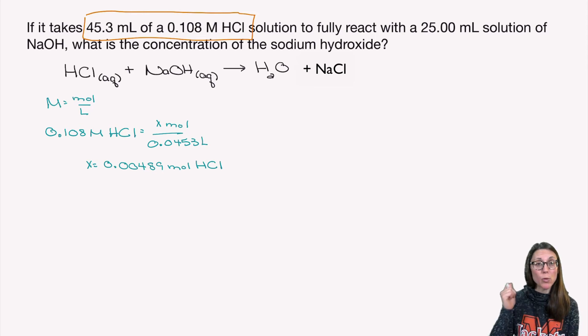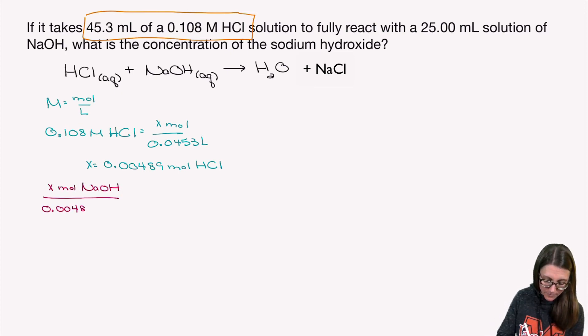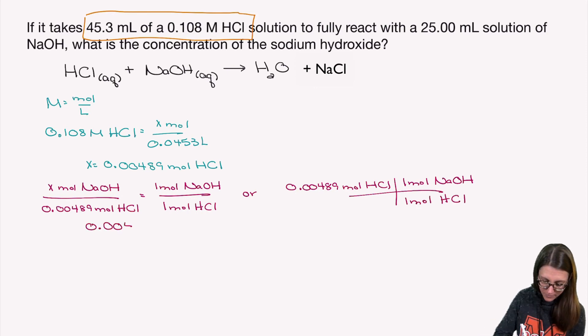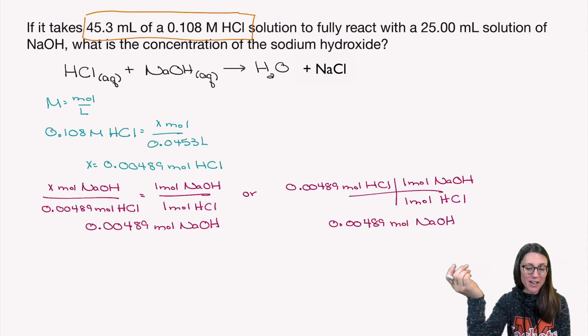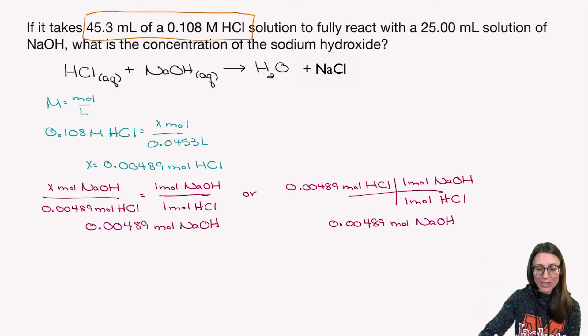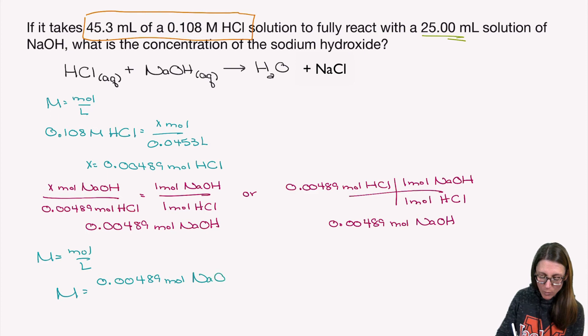Once I have my moles of HCl, I'm going to use the coefficients to convert to moles of NaOH. It's a one-to-one ratio, so the moles turn out to be the same. The last step is to find the concentration of the sodium hydroxide. At this point, you know moles, and if you look back to the question, we know the volume of that solution. So we'll again use our molarity equation. But this time, we're going to solve for the molarity. So I'll put my moles of sodium hydroxide in the numerator, and I will put the volume of the sodium hydroxide in liters in the denominator. And I find that my concentration, then, is 0.0196 molar for my sodium hydroxide.